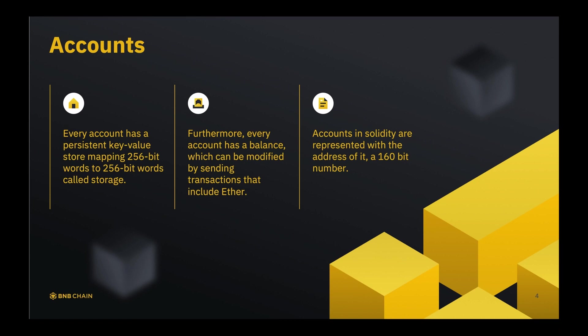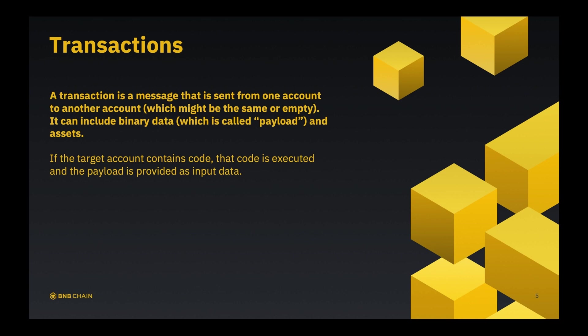Furthermore, every account has a balance, which can be modified by sending or receiving Ether. This is implemented through transactions. A transaction is basically a message that is broadcast inside the network of a blockchain, sent from one account to another. Note that this account could be the same or empty, so it can send Ether to itself. Sending to an empty account means creating a contract, which we will discuss shortly.